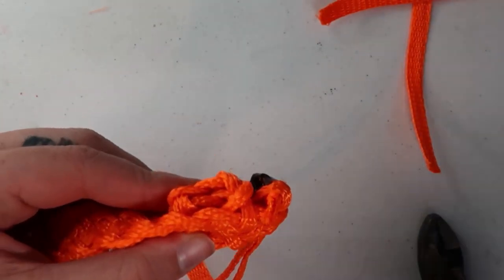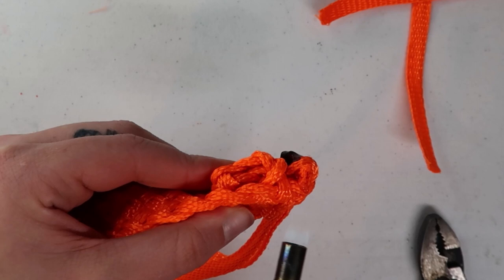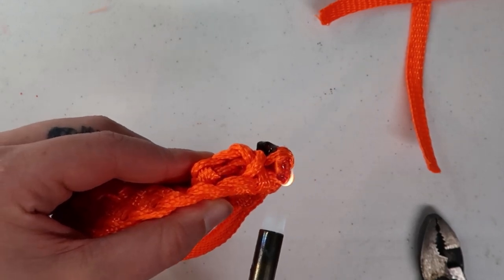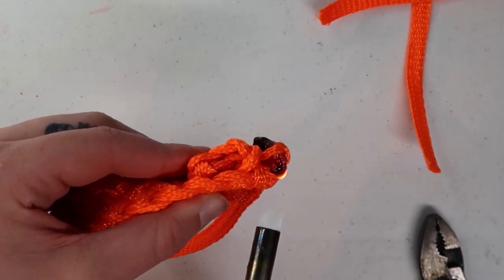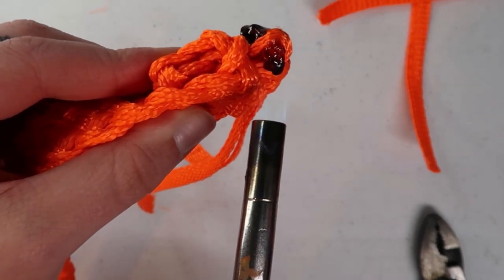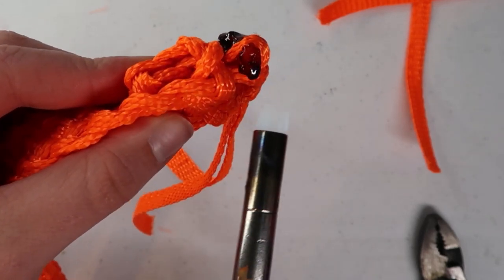When you go to cut your groupings, you don't want to cut it much longer than half an inch. The longer the strands are, the more likely they're actually going to catch on fire. And it does happen once in a while, but we're not actually trying to catch them on fire.